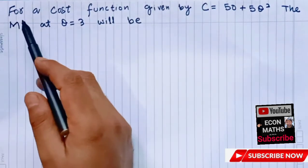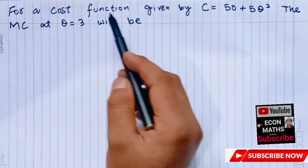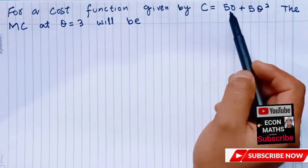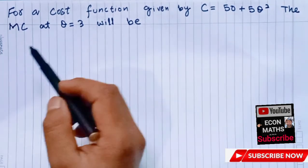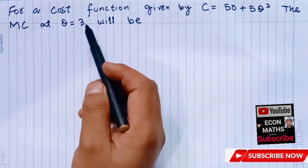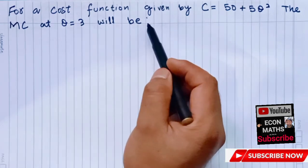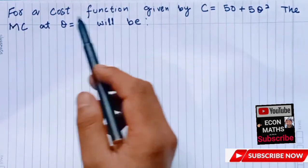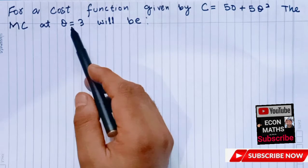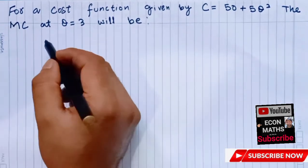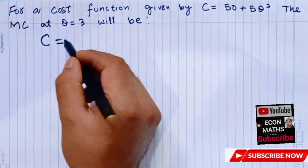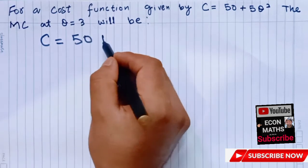The question asks: for a cost function given by C equals 50 plus 5Q squared, the marginal cost at Q equals 3 will be. So we have to find marginal cost when Q is equal to 3. We take the cost function, that is C equals 50 plus 5Q squared.